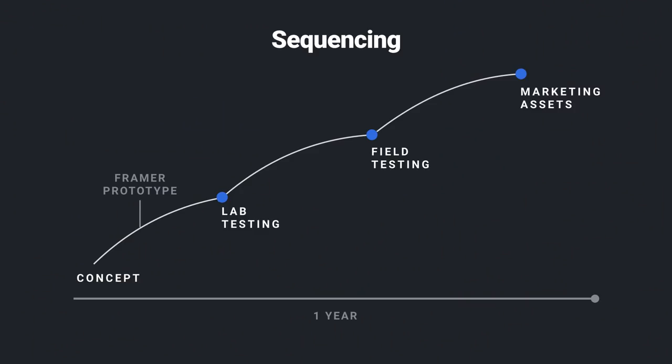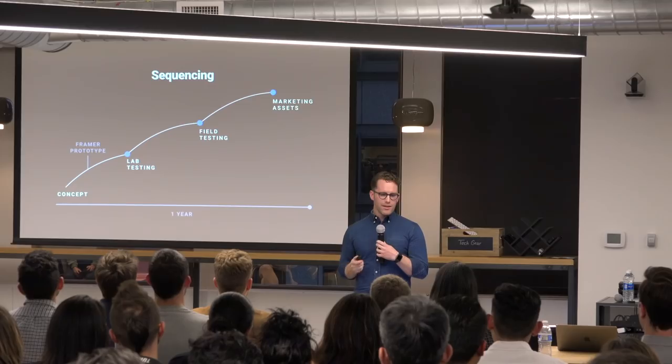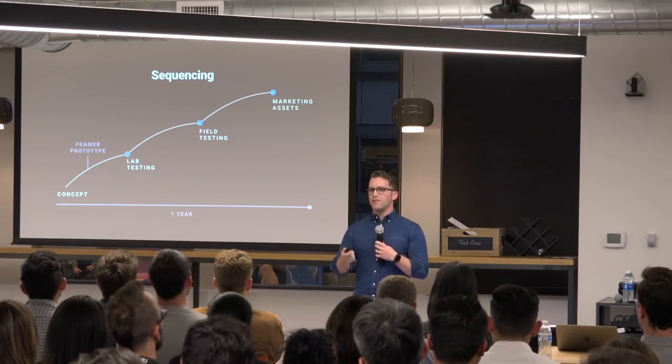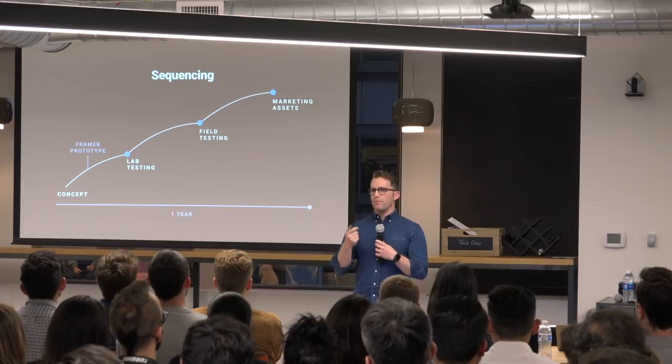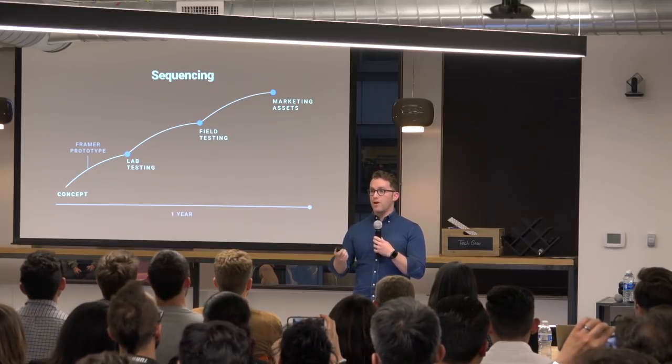This product took a year to build. It went from concept, to lab testing, to field research, and then ultimately to marketing assets. What I think is really cool — and what makes Framer a great tool for this type of work — is that the Framer prototype I built from the very beginning, from the very concept stage, ultimately lived out throughout the entire lifecycle of this product, all the way until we actually released it as a marketing asset. I think there are helpful elements of my process that can hopefully inform your prototyping or even your picking up Framer as a tool.